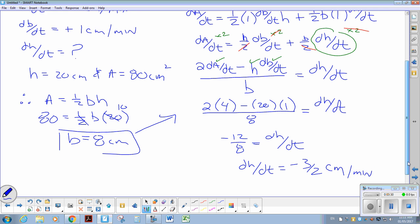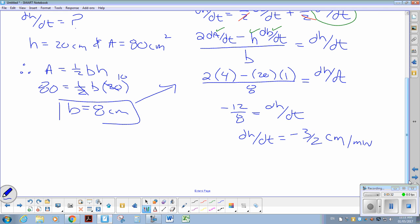So that means that the height has to decrease in order for that to maintain its current rate. Therefore, the height is decreasing at 3 halves of a centimeter, 1 and a half centimeters per minute.